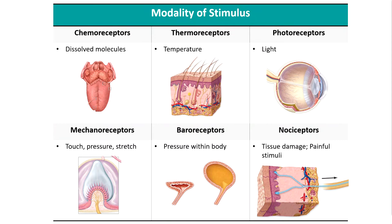Thermoreceptors detect changes in temperature in the skin and in the walls of the internal organs. There are receptors designed to trigger an action potential based on hot temperatures and on cold temperatures, each with their own specific ranges. Thermoreceptors are examples of what we call free nerve endings — nerves that don't have any special structure at the tips of the dendrites. Instead, proteins in the walls of those neurons are specifically involved in detecting a certain temperature range, and if that protein is triggered, it initiates an action potential in the entire nerve.